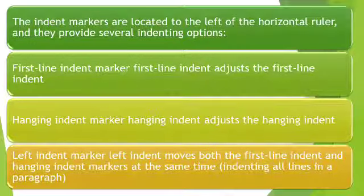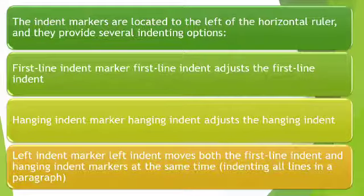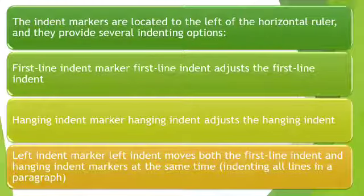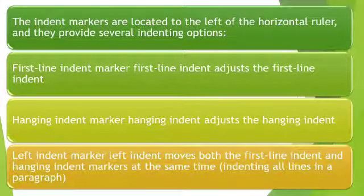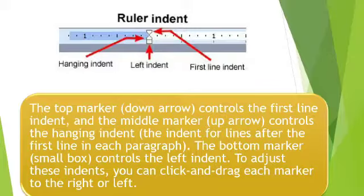The indent markers are located to the left of the horizontal ruler and they provide several indenting options. The first line indent marker adjusts the first line indent. The hanging indent marker adjusts the hanging indent. The left indent marker moves both the first line indent and hanging indent marker at the same time, indenting all lines in a paragraph.